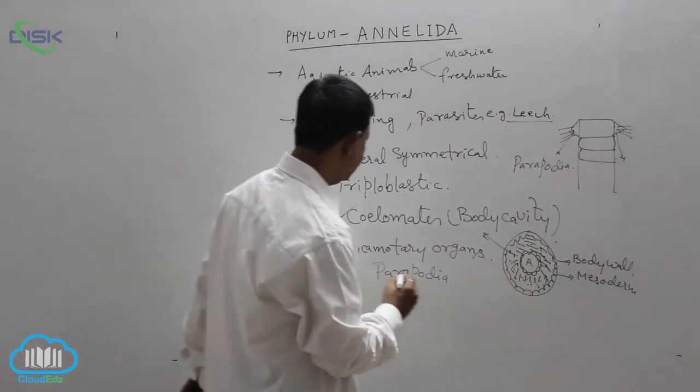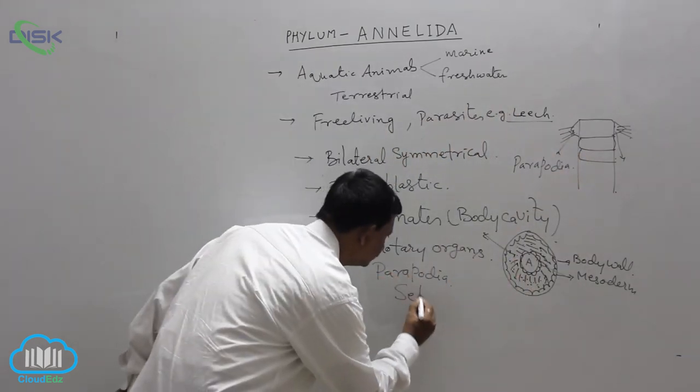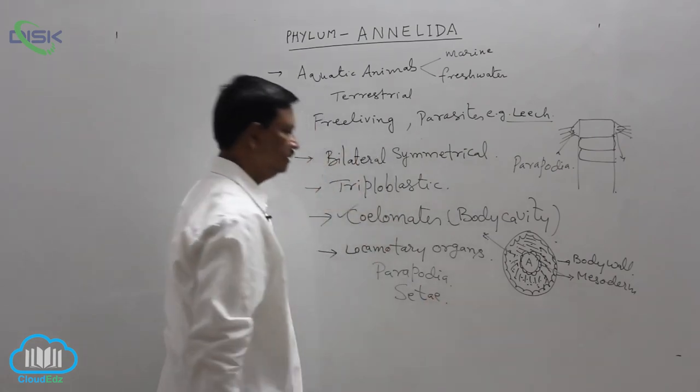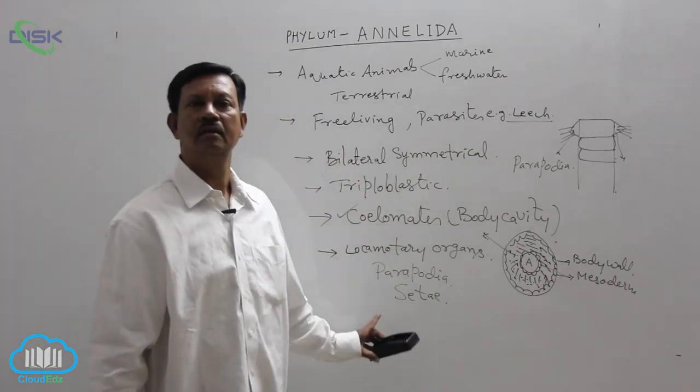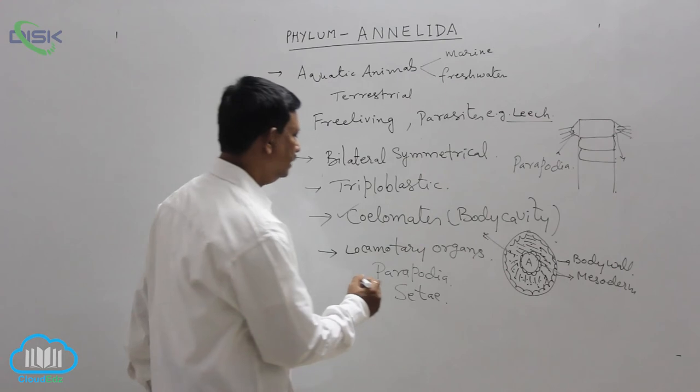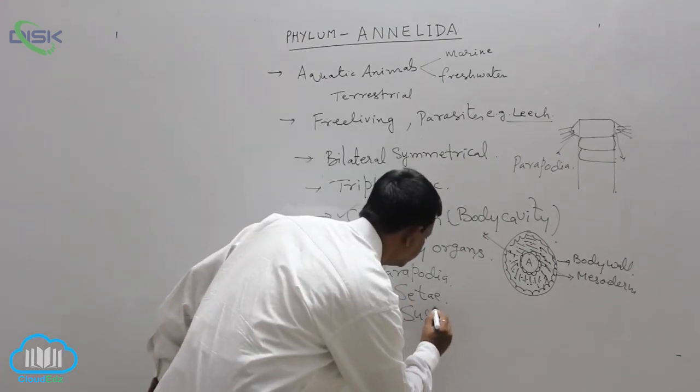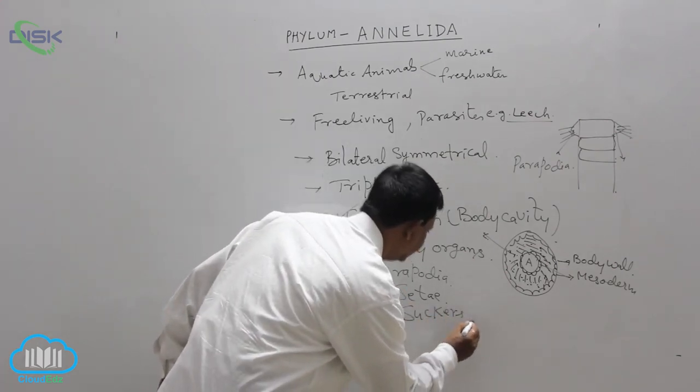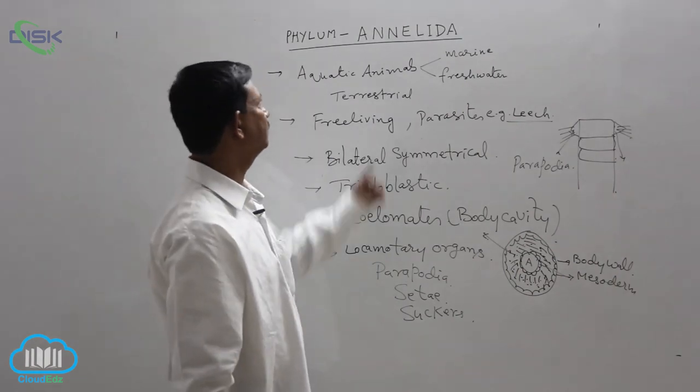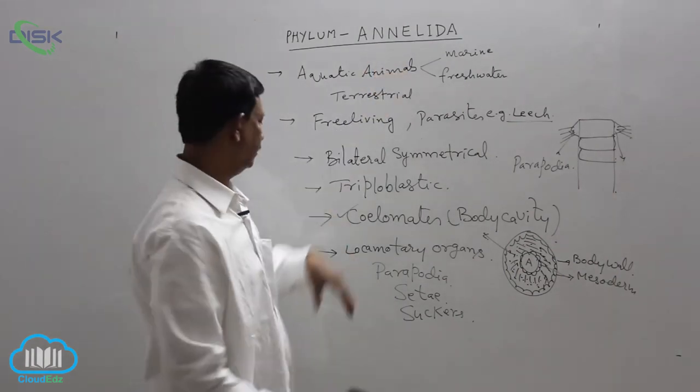In some animals, setae are also present. For example, earthworm. In some animals, suckers are present. There are different types of locomotory organs present in different animals in the phylum annelida.